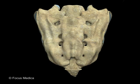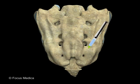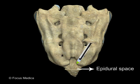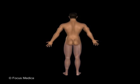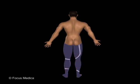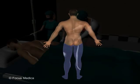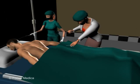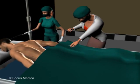Caudal epidural anesthesia is a process of injecting local anesthetics into the epidural space near the sacral hiatus to produce a reversible loss of sensation and relieve pain during surgical procedures.